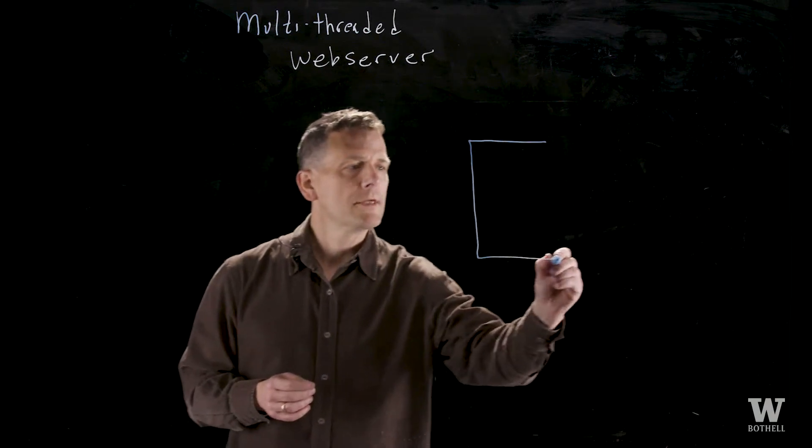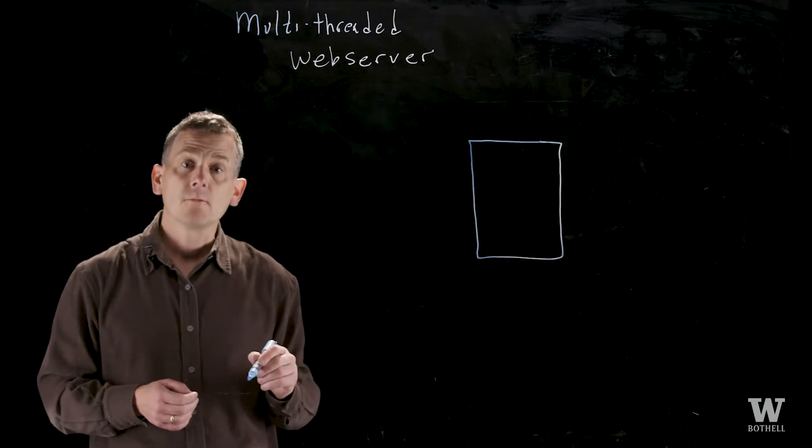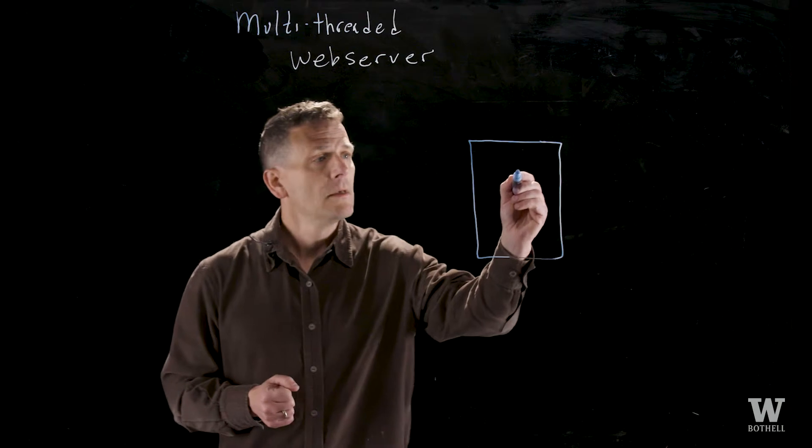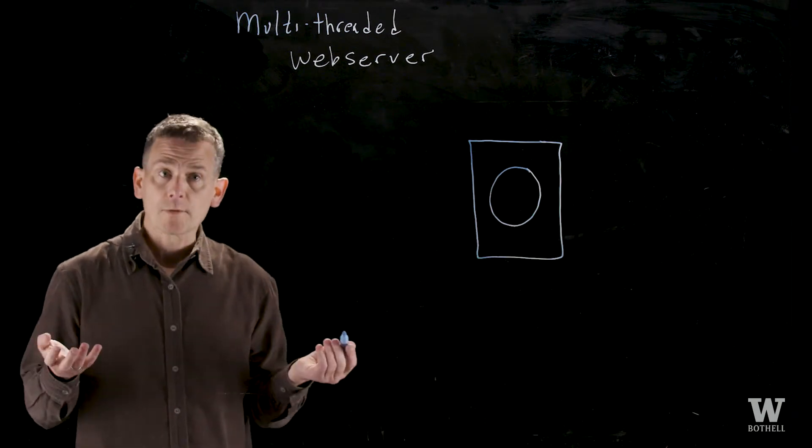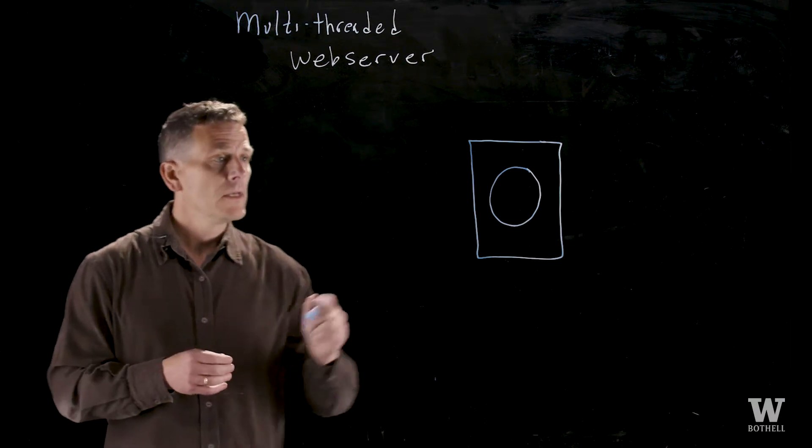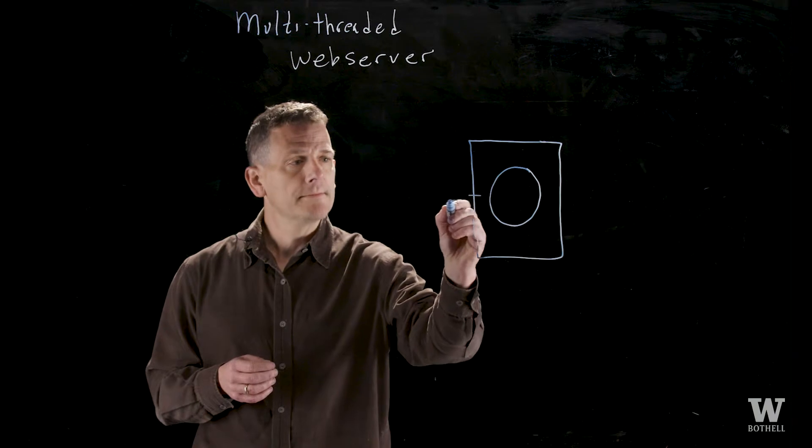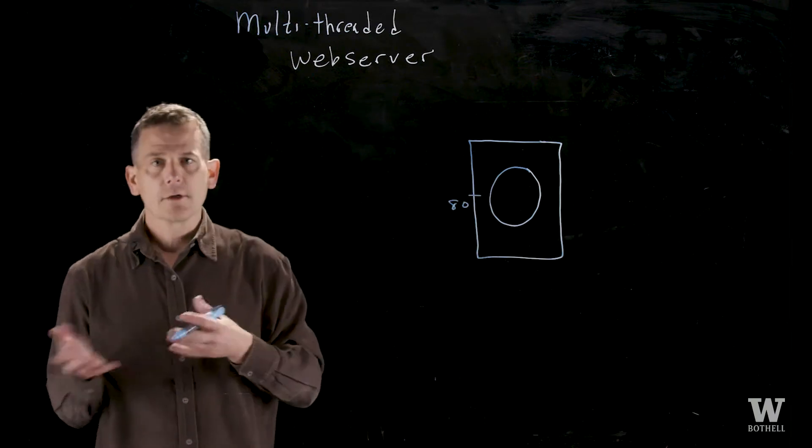So I'll draw a box to represent the actual physical system or the physical computer that the web server is running on. Within that physical box is a process, the web server, and it's either Apache or IIS depending if you're running on Windows or Linux. It is listening on port 80. Port 80 is a TCP IP port which serves clients.